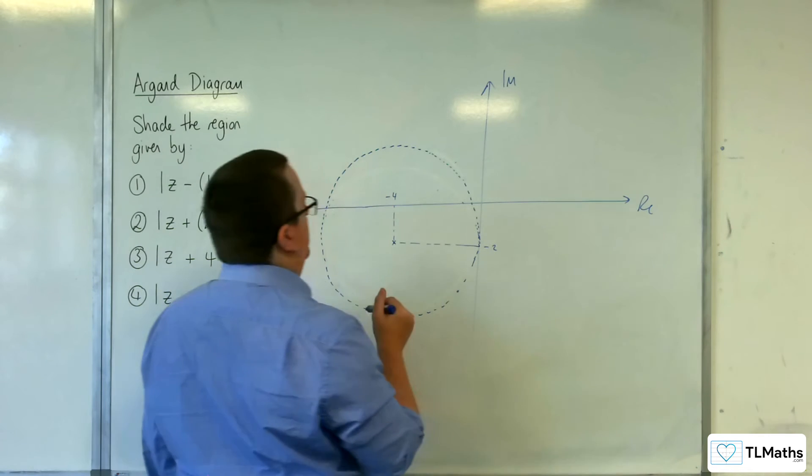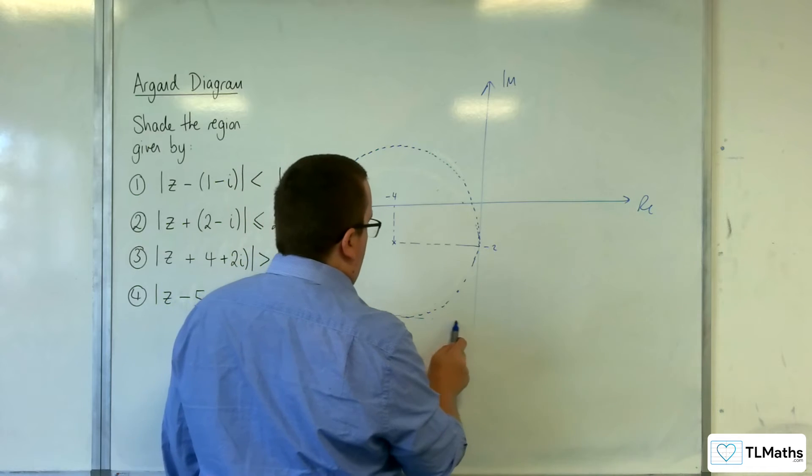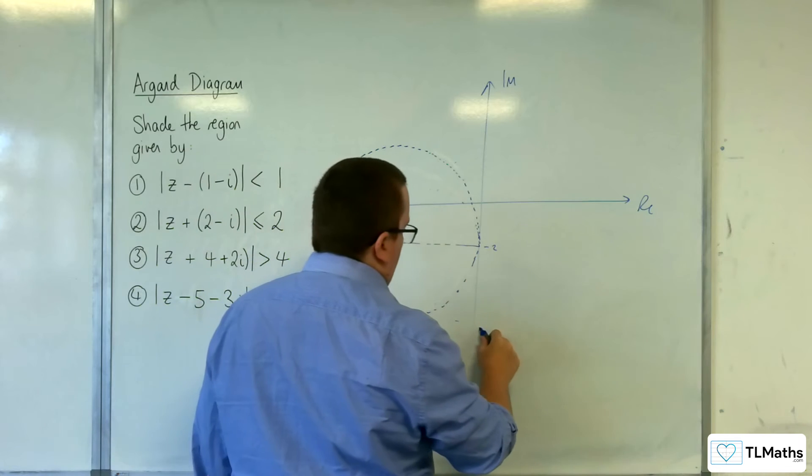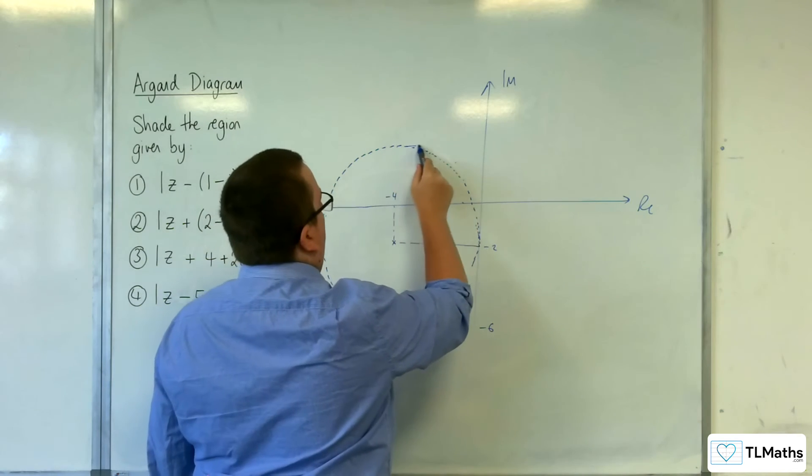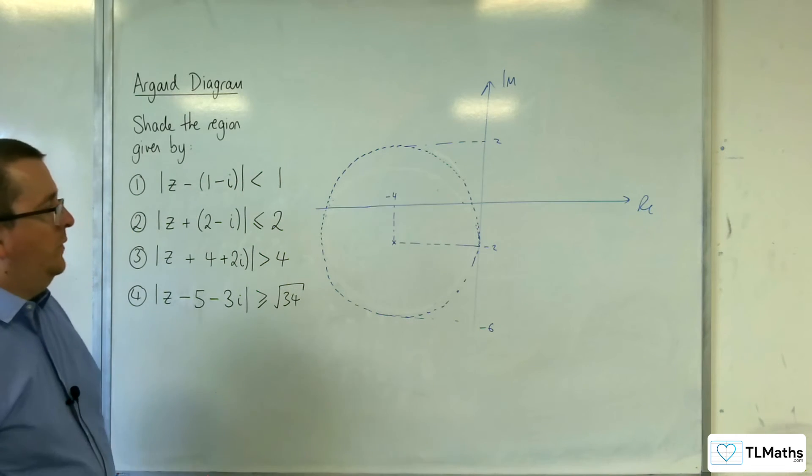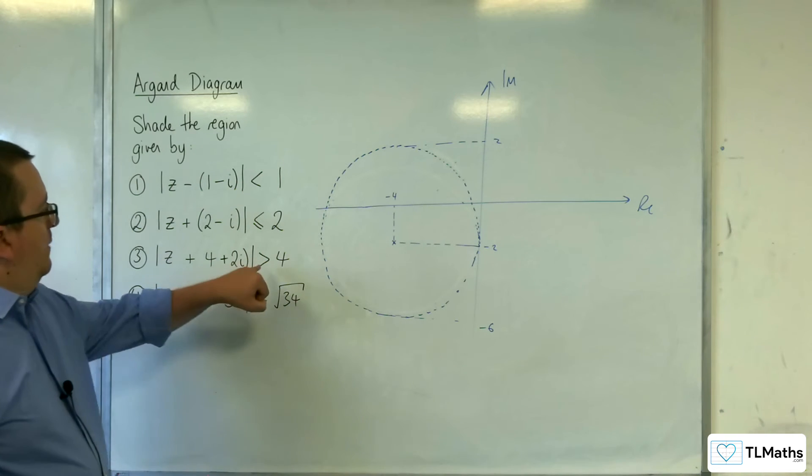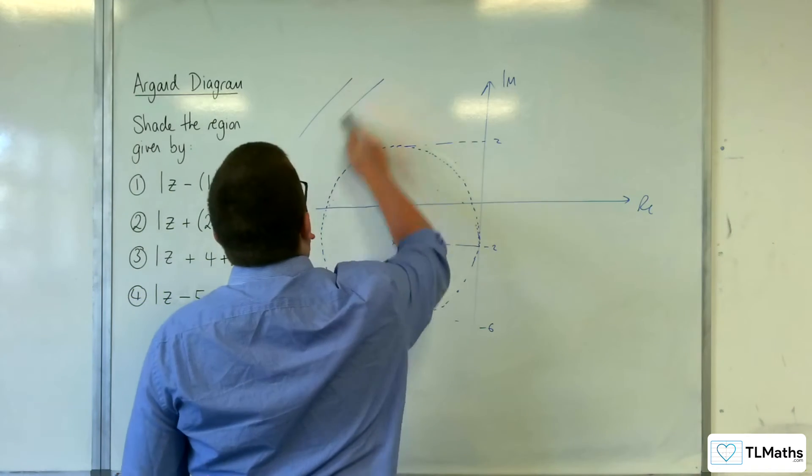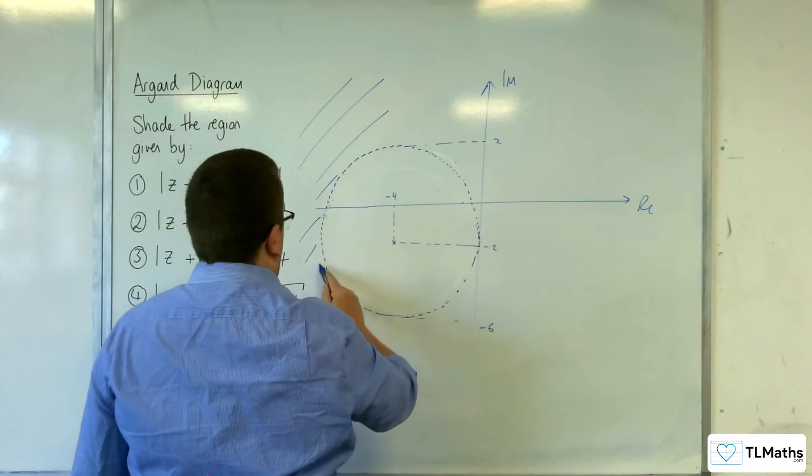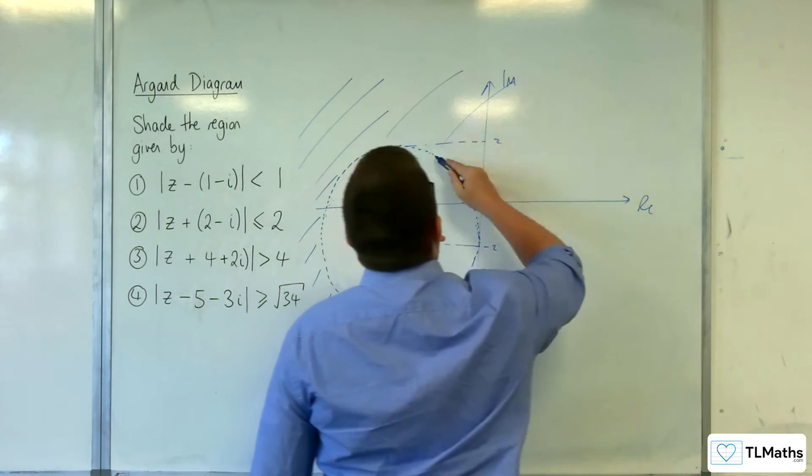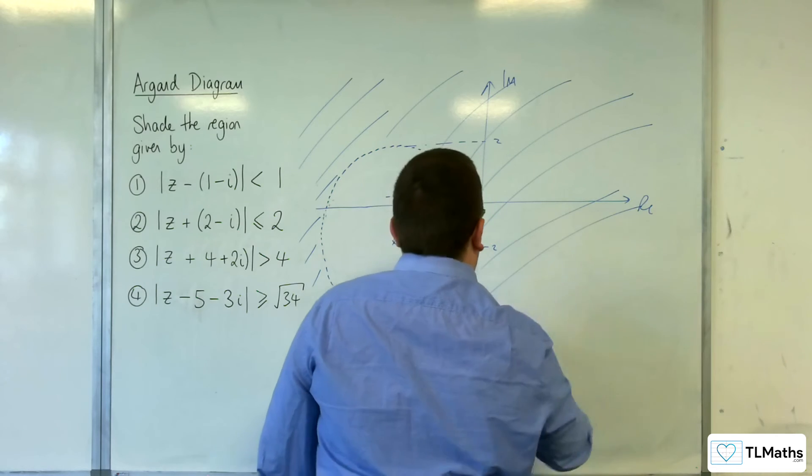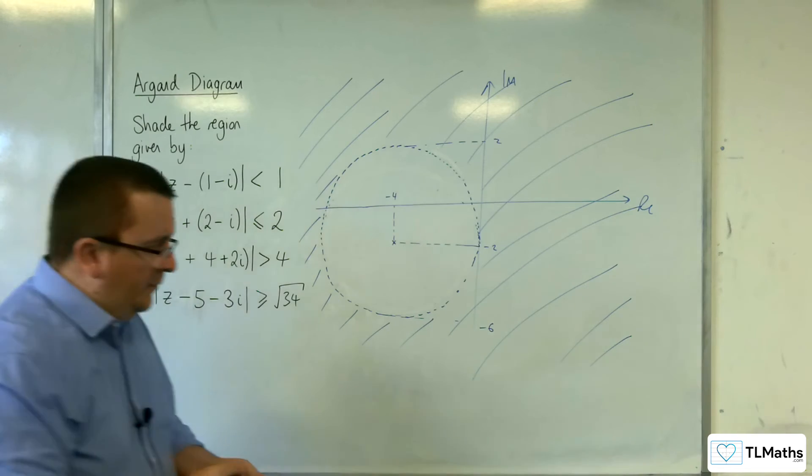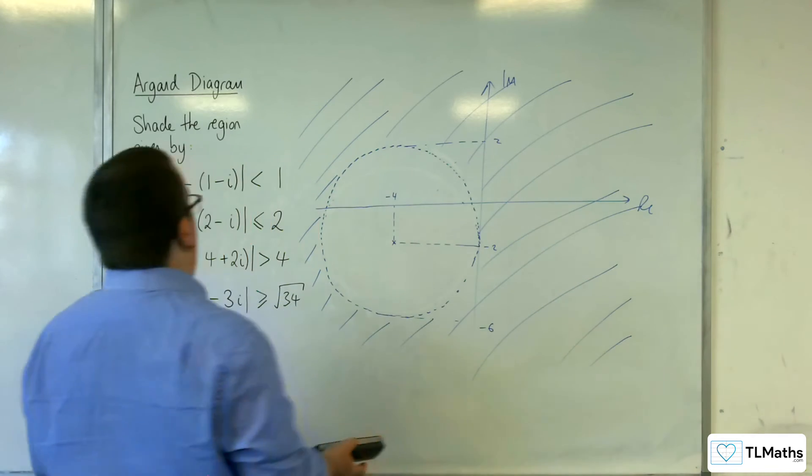Right. So there's my circle. It's got its lowest point down here. So it's got a radius of 4, isn't it? So that's minus 6. And that would be at 2. Now, because you want greater than 4, that means you want to shade the outside of the circle. So all of this. Anything that is outside the circle will get shaded. So that's example number 3.